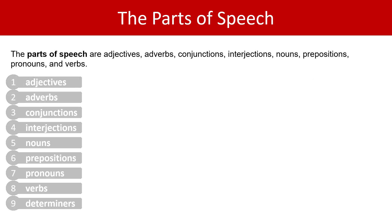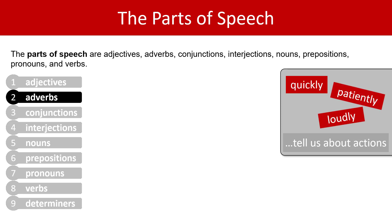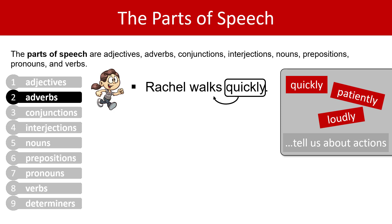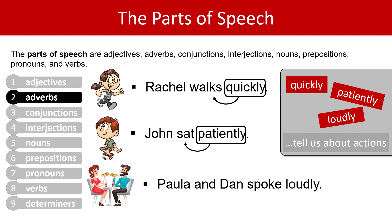Next we have adverbs. Adverbs tell us about actions. Here are three examples of adverbs: quickly, patiently, and loudly. Rachel walks quickly — the adverb 'quickly' tells us about the action. John sat patiently — the adverb 'patiently' tells us about the action. Paula and Dan spoke loudly — 'loudly' is our adverb and it tells us about the action.